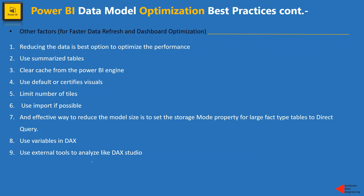Let's talk about a few other factors for better data refresh and dashboard optimization. Reducing the size is the best option to optimize performance. If a table has columns you don't need, don't bring all of the columns or related tables. When bringing data from SQL Server, we tend to click the button that says 'bring all related tables' — avoid that if you don't need all of those tables, as they increase model size, refresh time, and end up with poor performance.